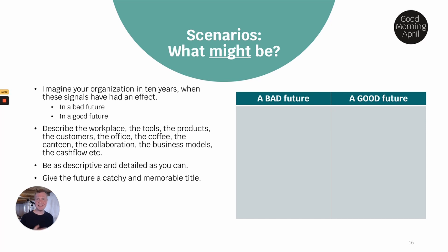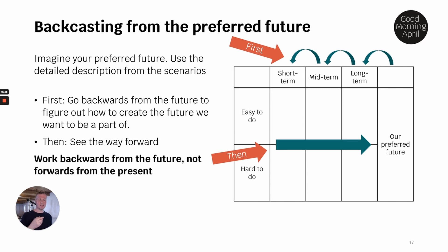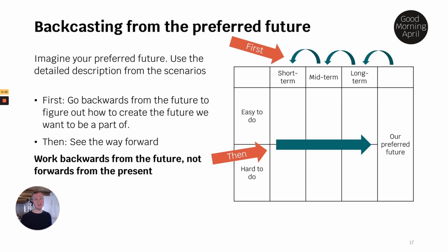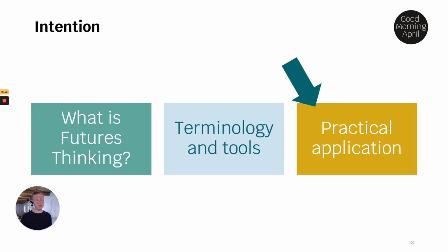All of that leads us to further understanding scenarios — what might be. We imagine some of these signals unfolding in a bad or good way, slow or fast, all over the world or just in our world. We describe it in very detailed terms to use our imagination to understand the scenarios, and we use those scenarios to backcast. We take our scenarios and calculate backwards to the long term, midterm, and short term, and then use that understanding to calculate forwards again — taking the future, calculating back to understand how we can move forward.